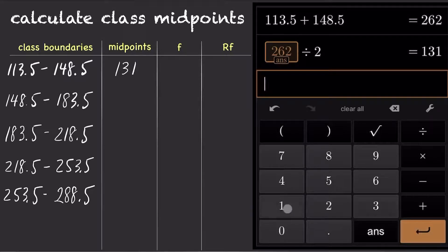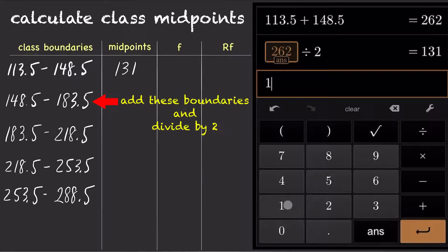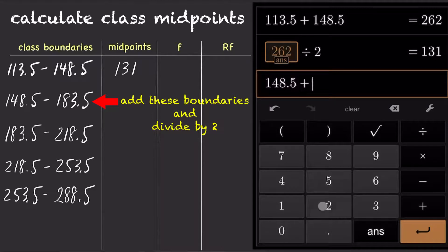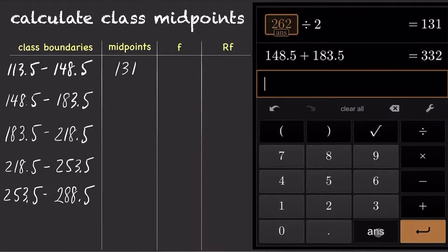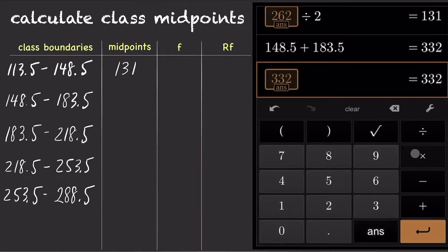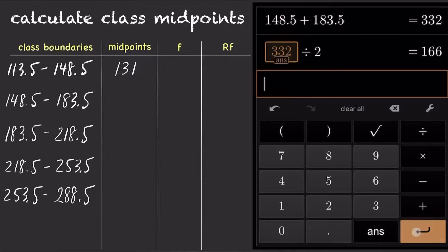And for the second class, 148.5 plus 183.5 equals 132. Divide the answer by 2, so the second class midpoint is 166.